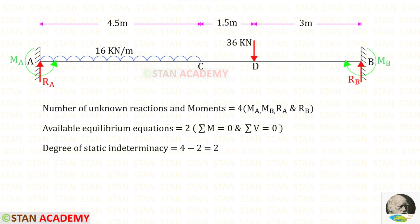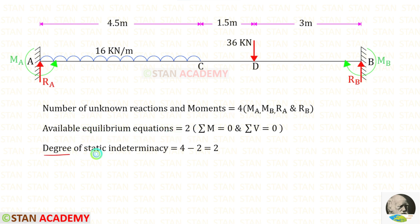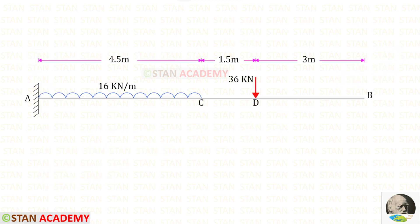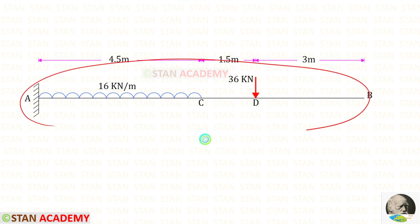Now let us find the degree of static indeterminacy. In this beam the number of unknown reactions and moments are 4. The available equilibrium equations are 2. So the degree of static indeterminacy is equal to 4 minus 2, which gives us 2. To make this beam statically determinate, let us remove the vertical reaction Rb and the moment Mb from point B. So the point B becomes a free end, and the beam changes from a fixed beam to a cantilever beam.